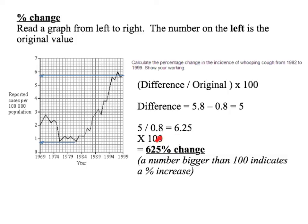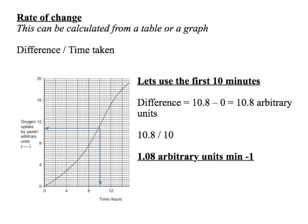Now some people think they've gone wrong and try to do something completely different. But a number bigger than 100% means the value has increased — you've got a percentage increase. So that is actually correct: a 625% change shows that the later value is much bigger than the original.